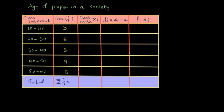In this video, we are going to learn about finding mean by assumed mean method. We have some data of age of people in society. The class interval shows the ages here and the frequency shows the number of people in that age range.